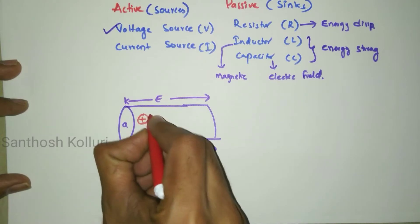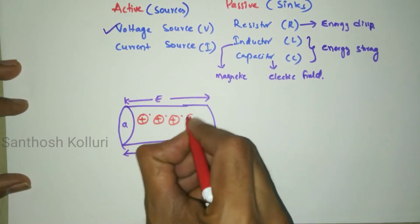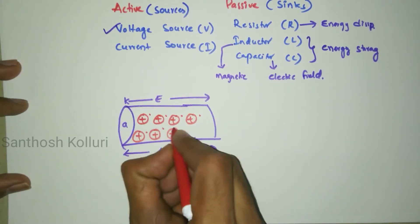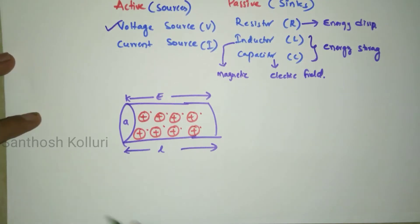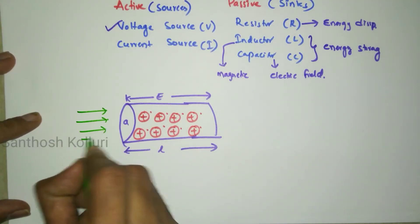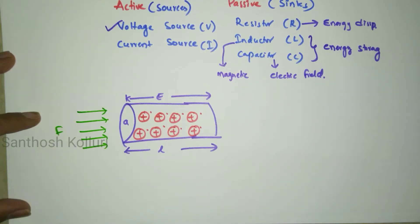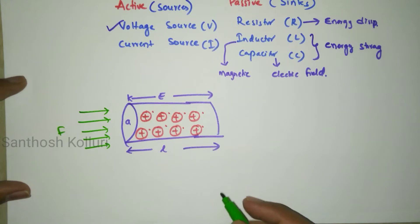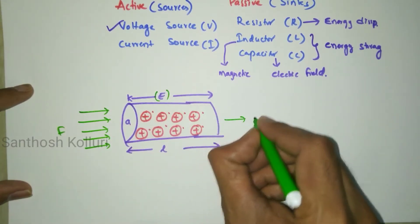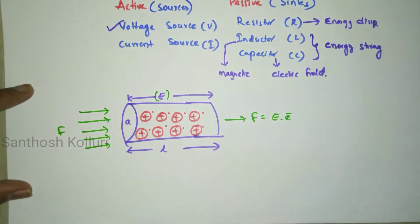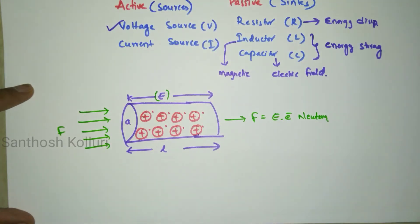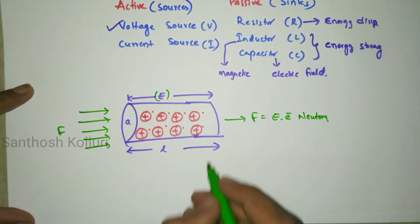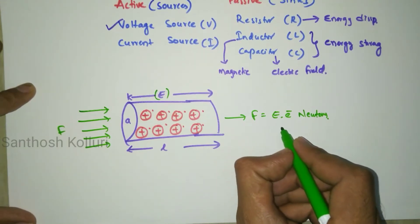We have free electrons, and the valence electrons are shown in dotted lines. Whenever we apply a certain force on the conductor by applying electric field intensity E, the force exerted on each free electron is F is equal to E into e newtons.